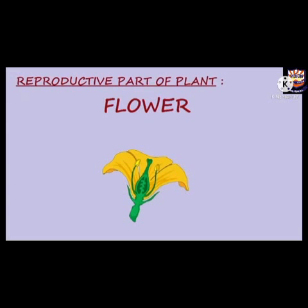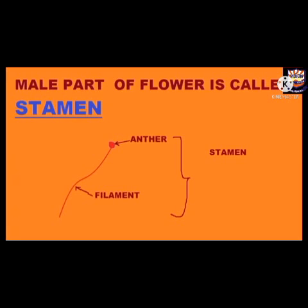Like all living things, plants must reproduce to continue their species by replacing those that die. In plants, flowers are the reproductive system. They contain the reproductive organs. The male reproductive organs are called stamens, and they produce the male reproductive cells or gametes, which are contained in pollen grains. This is the diagram of a male reproductive organ.